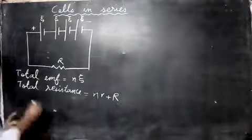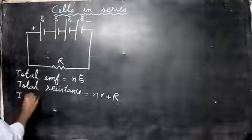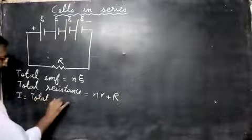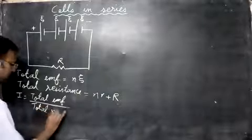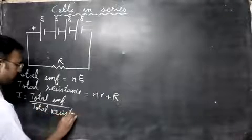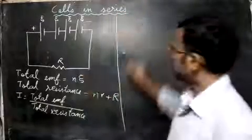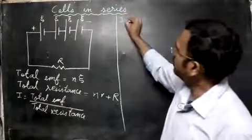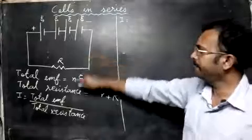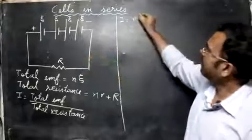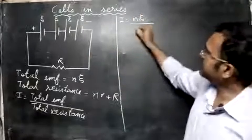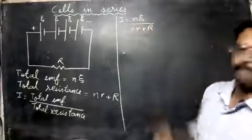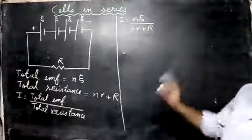Now let's find the current formula. According to Ohm's law, current I equals total EMF divided by total resistance. So I is equal to n·ε divided by (n·r + R). This is the current formula for cells in series.